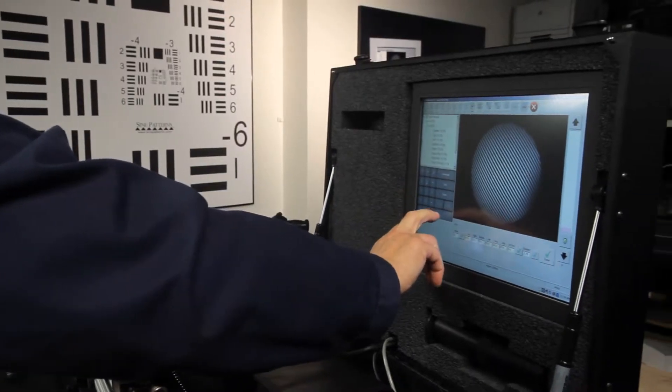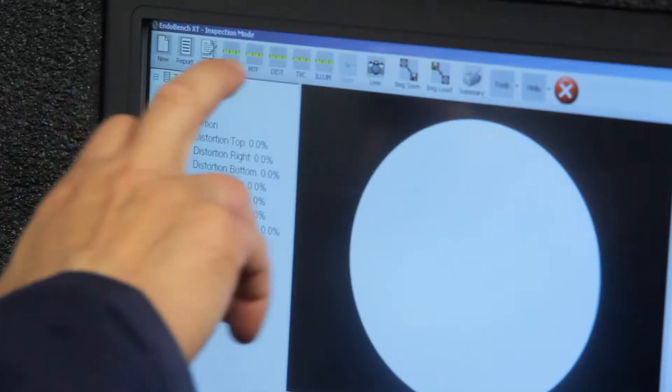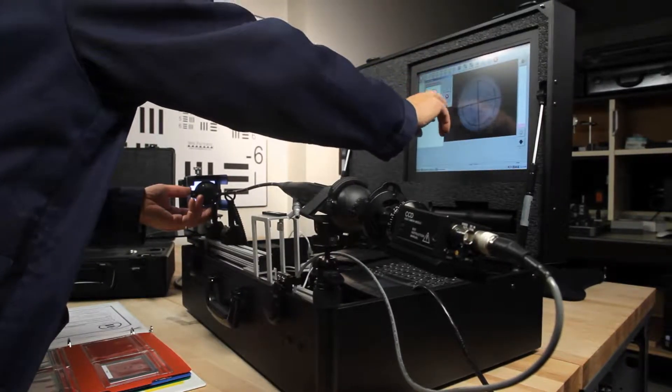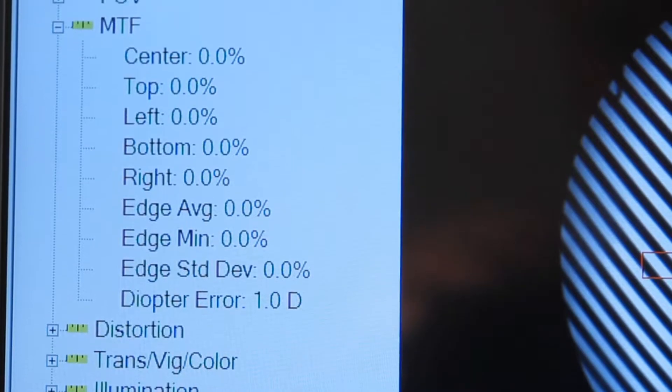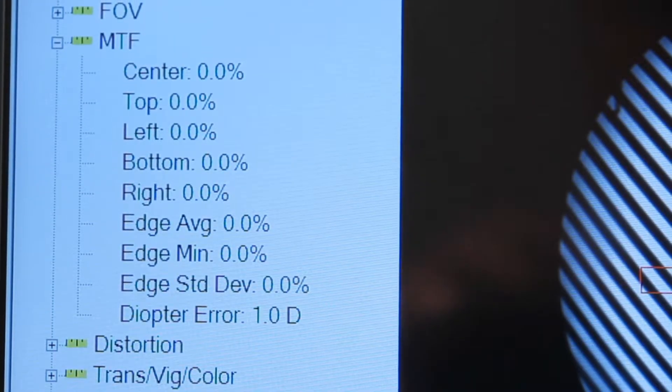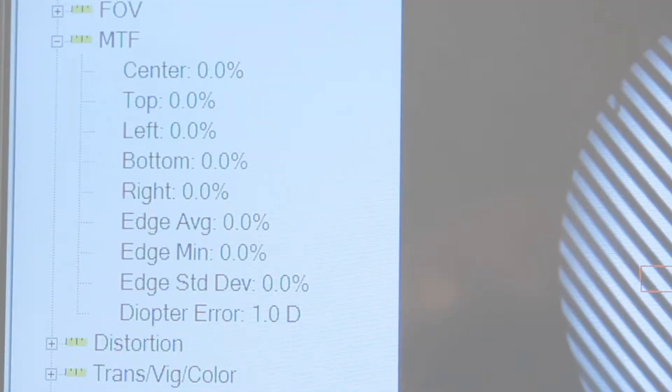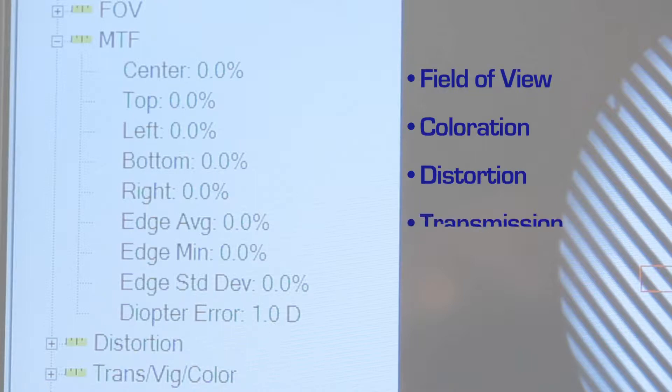Using algorithms developed by Lighthouse Imaging, the machine vision system in the EndoBench performs image processing to generate measurements in a quantitative way, measuring parameters including field of view, coloration, distortion, transmission, vignetting, and MTF.